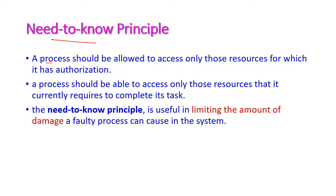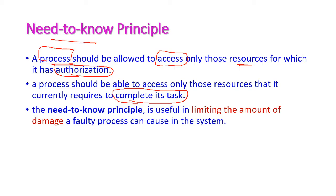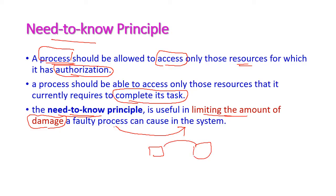Next, let us see the need to know principle. A process should be allowed to access only those resources which are authorized. The process is allowed to use only the authorized resource to complete its current task. The need to know principle is very helpful for limiting the amount of damage — hardware damage or resource damage — that a faulty process can cause in the system, because the process is allowed to access only authorized resources.